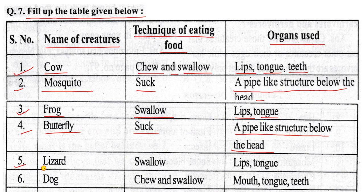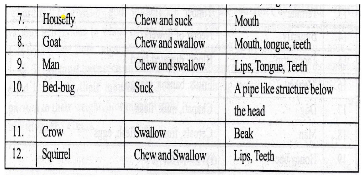Number five: lizard — tongue. Number six: dog — mouth, tongue, teeth. Number seven: housefly — chew and suck. Number eight: chew and swallow — tongue and teeth.